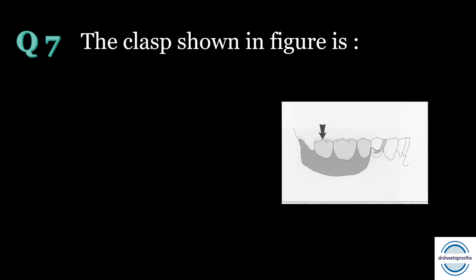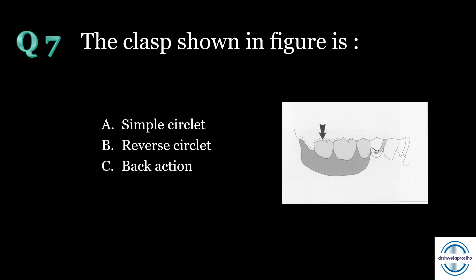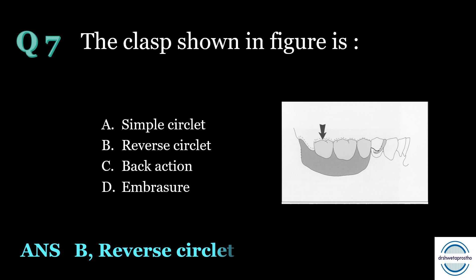Question number seven: the clasp shown in the figure is — A. Simple circlet, B. Reverse circlet, C. Back action, D. Embrasure clasp. The answer is B, reverse circlet. Reverse circlet is a circumferential clasp which involves the undercut adjacent to the edentulous area. It is mainly given in Kennedy's Class 1 and 2 cases and approaches from the mesial aspect of the distal abutment.